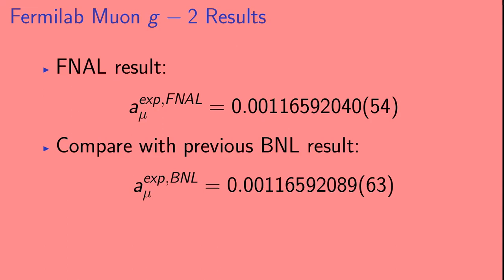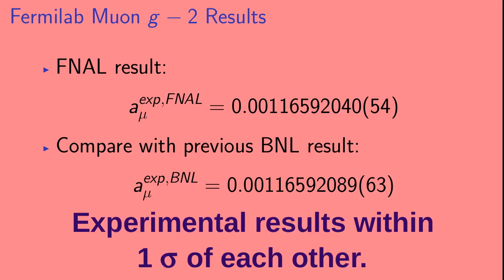Here is the result that the Fermilab muon g-2 experiment announced compared with the previous Brookhaven result. There are three things that I'd like to point out about this new result. First, the two experimental results are within one sigma of each other.